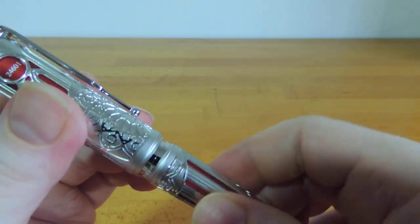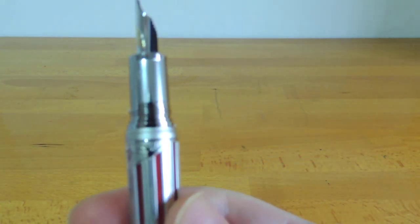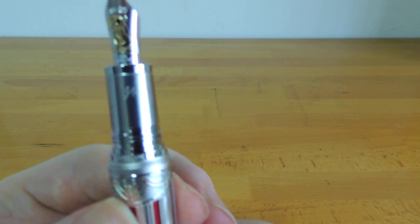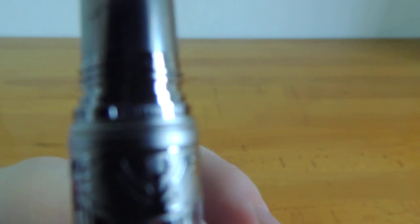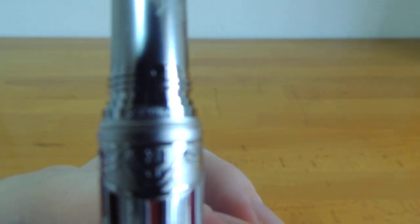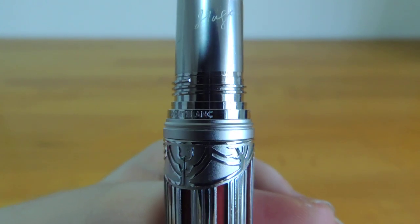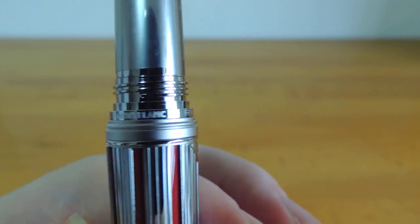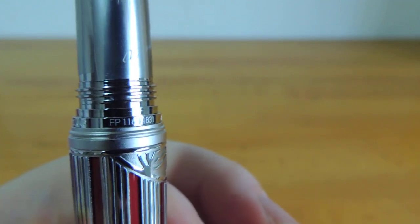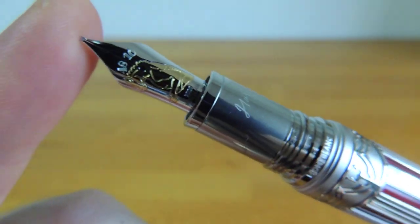And then the nib. So the limited edition number is on the band where Mont Blanc is inscribed. There we go. Mont Blanc. And then the limited edition number is right there. Fountain pen. 1831.